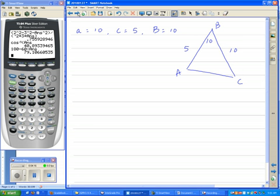Maybe A is 10. Maybe C is 5. And angle B is 10. Nice angle or side angle side setup. The law of cosines. We need to find baby B first.